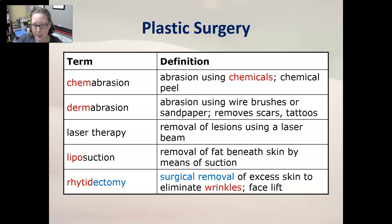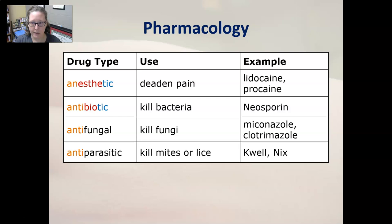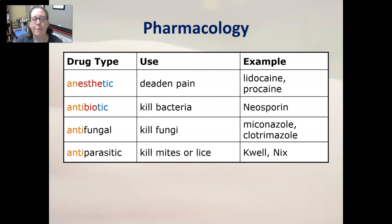Rhytidectomy is the surgical removal of excess skin to eliminate wrinkles, also known as a facelift. Now let's talk about pharmacology for the integumentary system. An anesthetic will deaden pain — examples are lidocaine and procaine. An antibiotic kills bacteria, like Neosporin. An antifungal kills fungi, like miconazole and clotrimazole. An antiparasitic kills mites or lice, like Qwell or Nix.